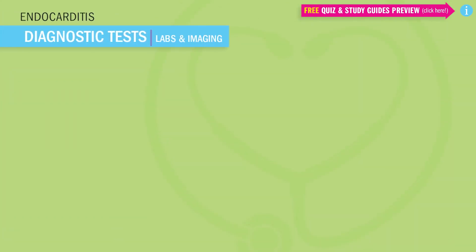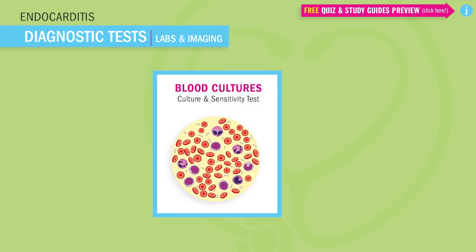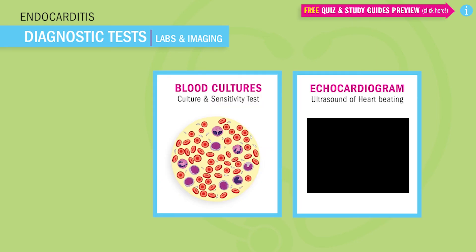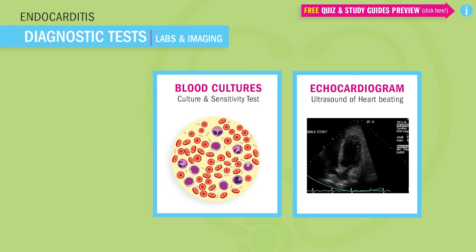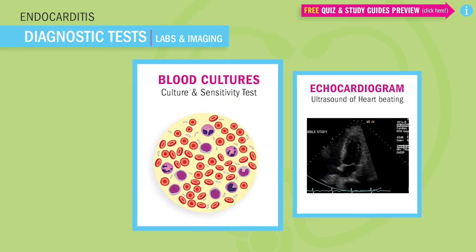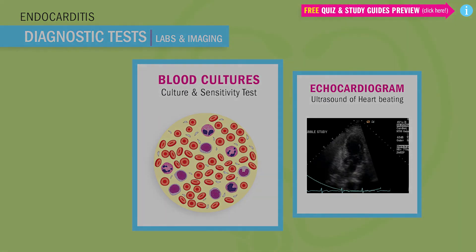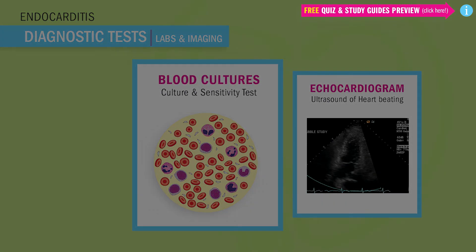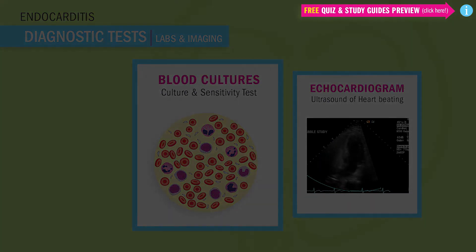Now for diagnostic tests for infective endocarditis, we do both blood cultures and an echocardiogram. The blood cultures help pinpoint which kind of germ it is, so we can match it better to a drug that will kill it best.